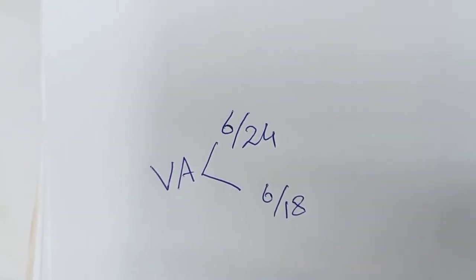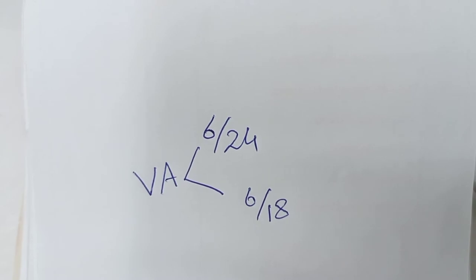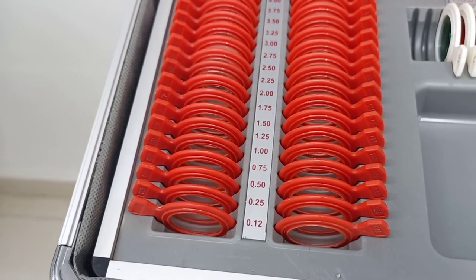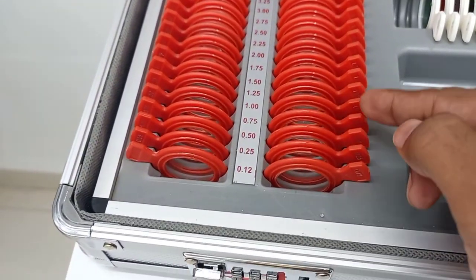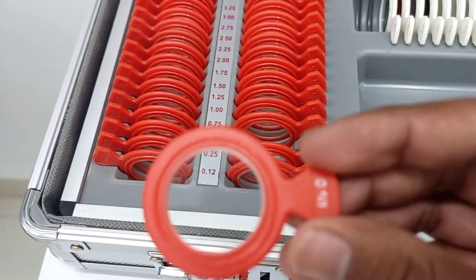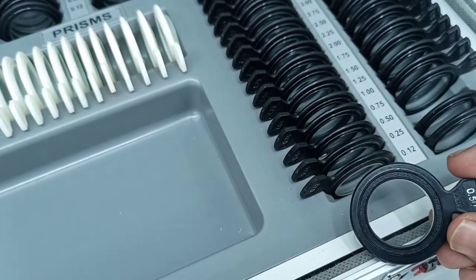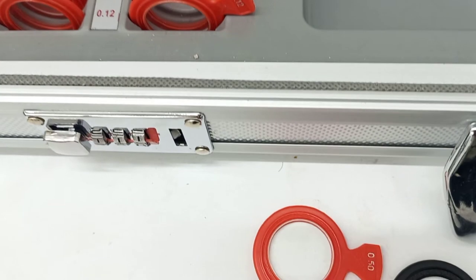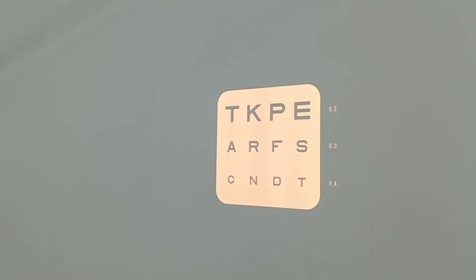The visual acuity of our patient is 6/24 in the right eye, so we will select the probe lenses accordingly. I will pick up probe lenses from the minus and plus spherical sections — lens number one is minus 0.50 spherical and lens number two is plus 0.50 spherical. Since the visual acuity is 6/24, the target line for the patient will be 6/18.